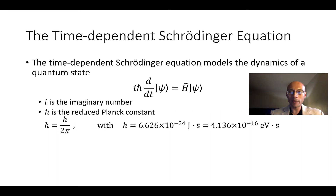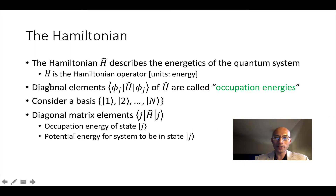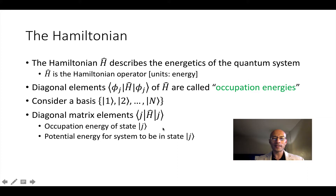Now, let's look at the time-dependent Schrödinger equation. It takes this form, where we have the imaginary number, h-bar — the reduced Planck constant — and the time derivative of ket psi is equal to the Hamiltonian operator acting on ket psi. This is a very important equation in quantum mechanics; it models the dynamics of a closed system. Therefore, H is a very important operator. The Hamiltonian H describes the energetics of the quantum system. It has units of energy, and the diagonal elements of the Hamiltonian are called occupation energies. The diagonal element j-H-j is the occupation energy of state j — that is, what is the potential energy of the system to be in state j?